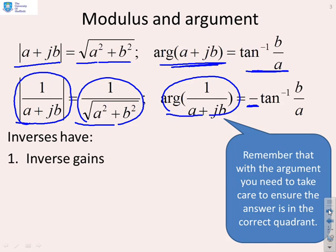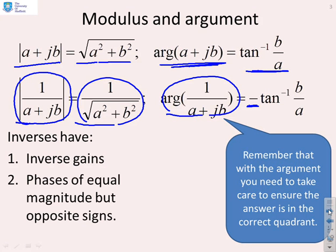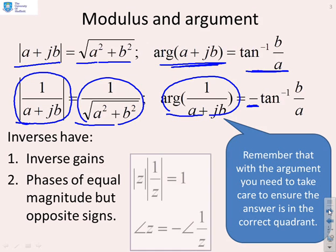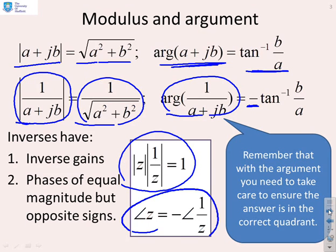Inverses therefore have inverse gains, and they have phases of equal magnitude but opposite signs. The modulus of z times the modulus of 1/z must give you 1, and the argument of z is minus the argument of 1/z. Those results were covered in an earlier video.